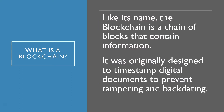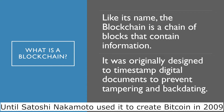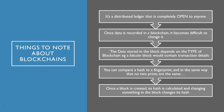Now a blockchain, like its name, is a chain of blocks that contain information. It was originally designed to timestamp digital documents to prevent tampering and backdating of information. First of all and most importantly, it is a distributed ledger system that is completely open to anyone and everybody. Once data is recorded in a blockchain it becomes very difficult to change or control it.